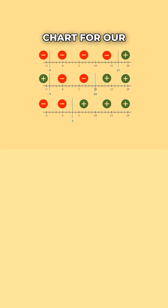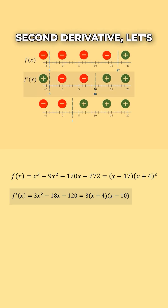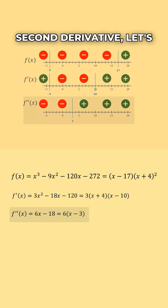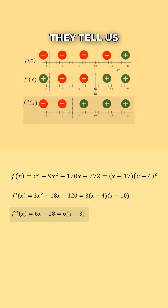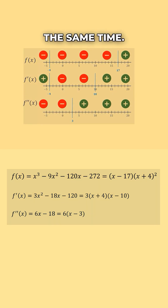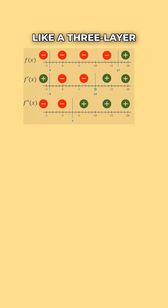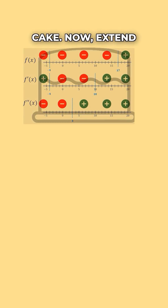Now that we've found the sign chart for our polynomial, the first derivative, and the second derivative, let's go over what they tell us about the graph of the polynomial when used at the same time. First, let's stack them on top of each other like a 3-layer cake.